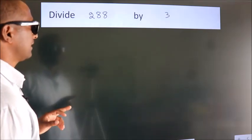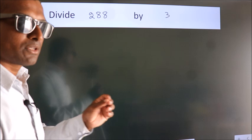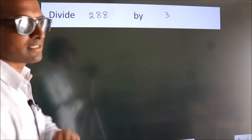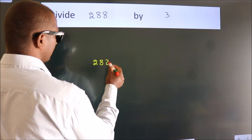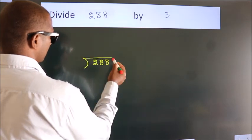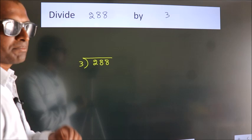Divide 288 by 3. To do this division, we should frame it in this way: 288 here, 3 here. This is your step 1.